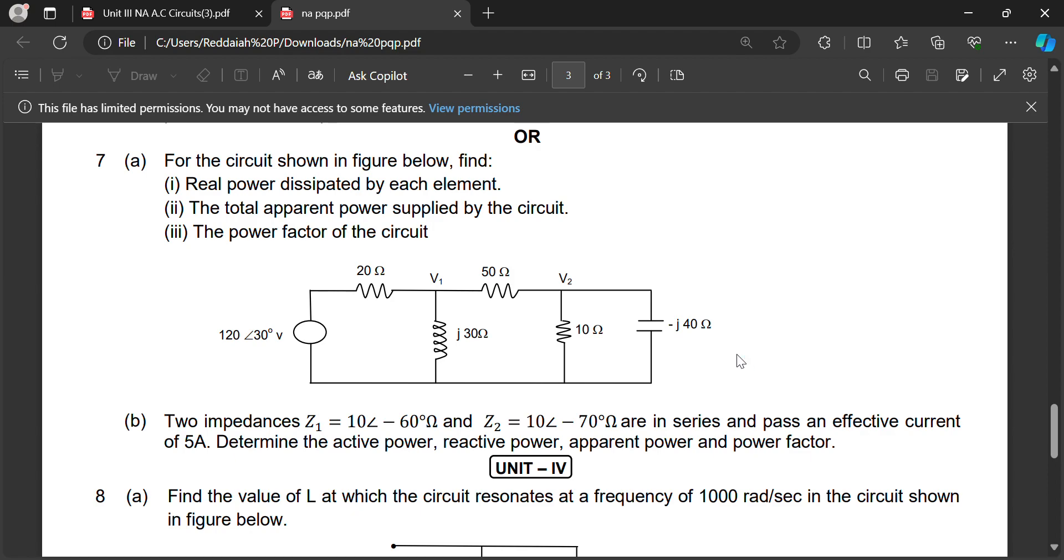From that, V equal to IZ. By using that formula V equal to IZ you can calculate V. Determine active power. From the impedance triangle you can calculate active power, VI cos phi. Reactive power is VI sin phi, apparent power is VI, and power factor is from the impedance, and you will get the angle.